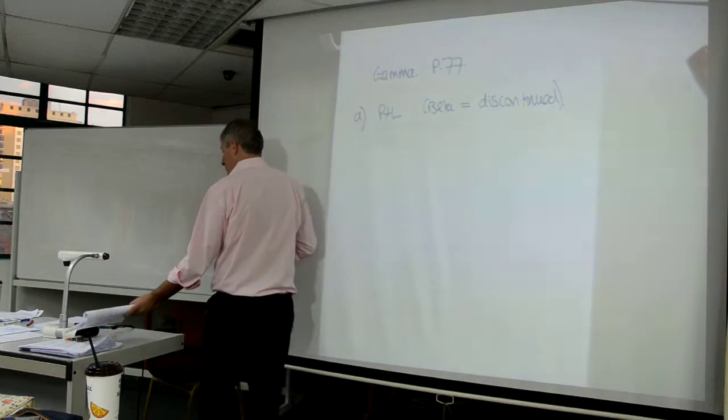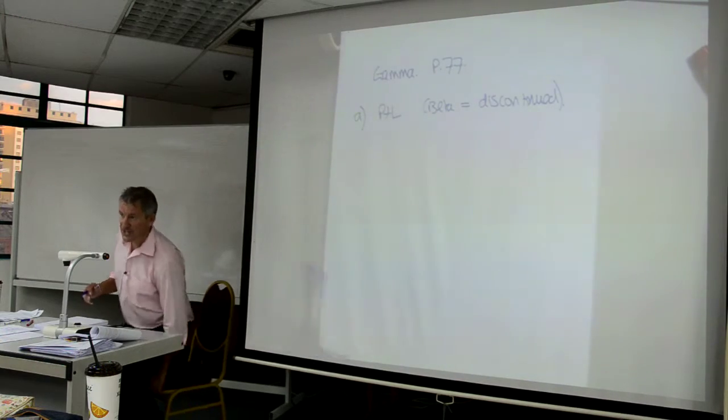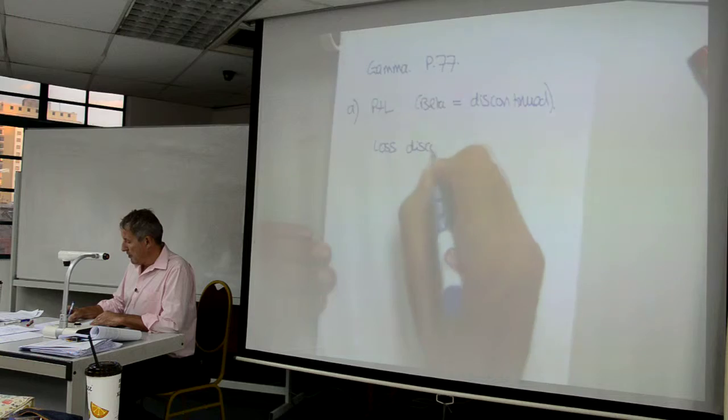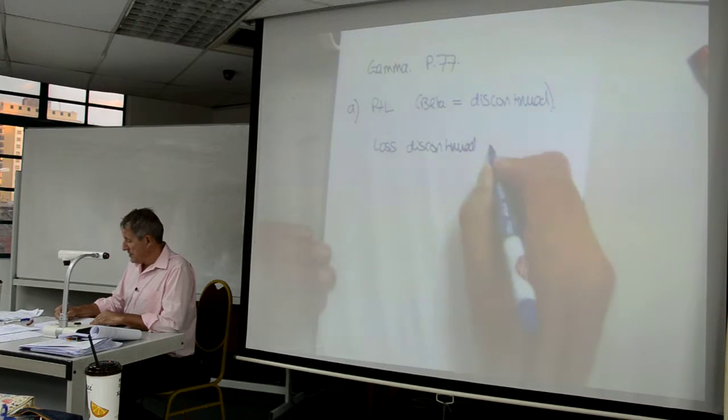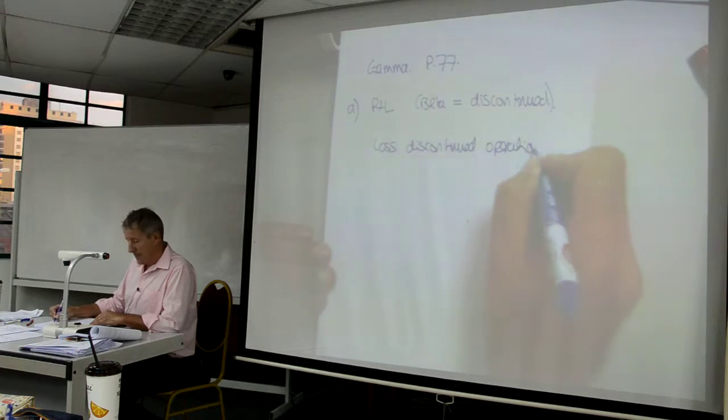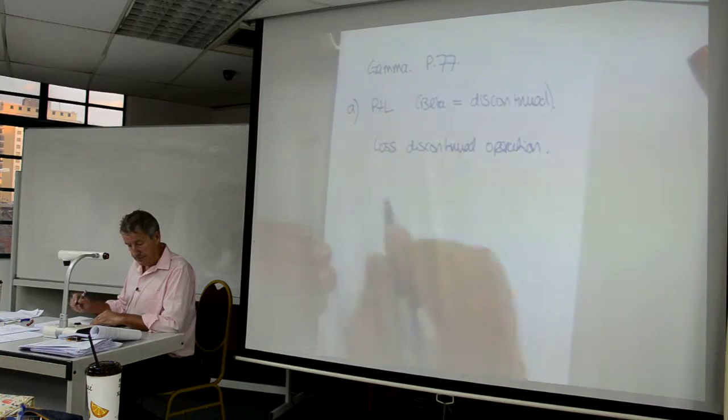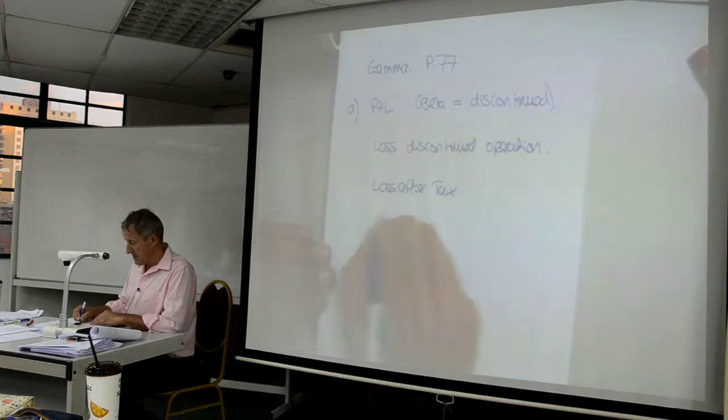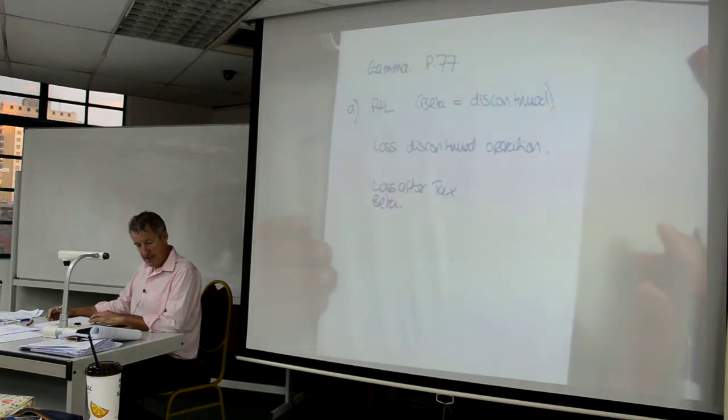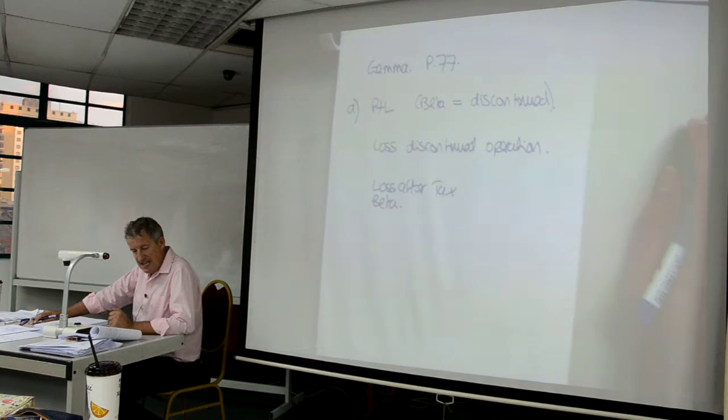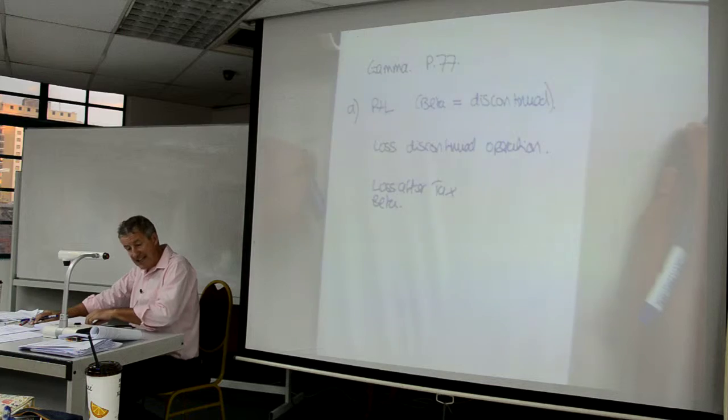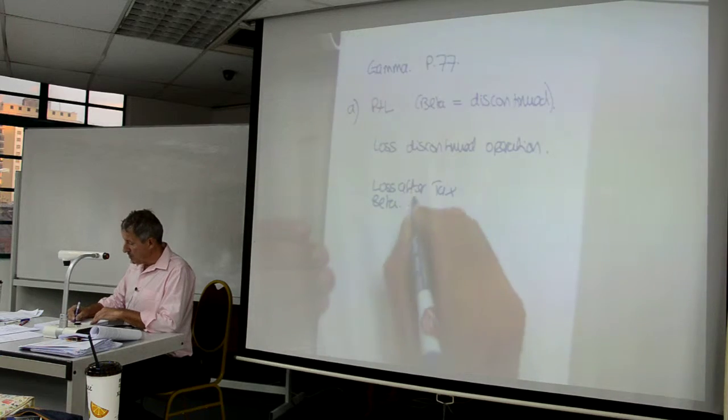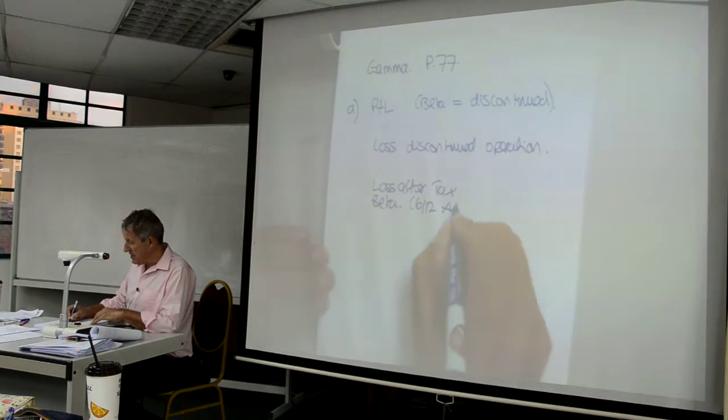The first thing that I want to do is calculate the single line. So let us calculate the loss on the discontinued operation. And that loss is twofold. There is the loss after tax. So this is Beta. The loss after tax is 40, but that's for the whole year. So the loss after tax that I'm talking about is 20.